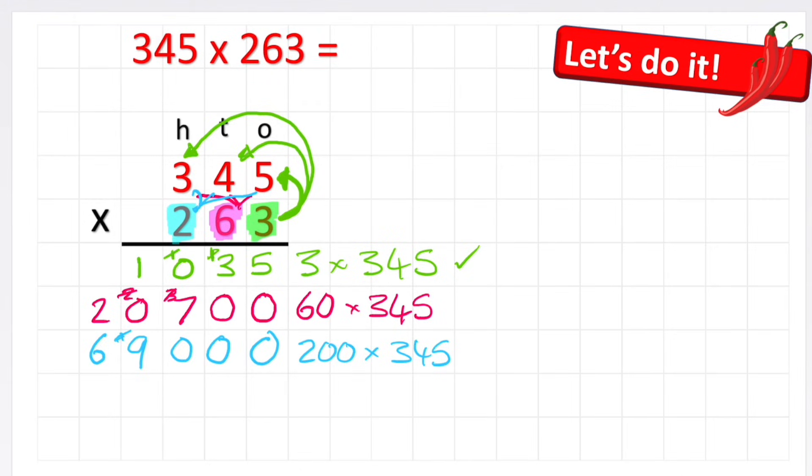So I've multiplied all the individual parts, but am I finished? No, because now I need to put it all back together. So I'm going to add an add sign. 5 plus 0 plus 0 is 5. 3 plus 0 plus 0 is 3. 0 plus 7 plus 0 is 7.